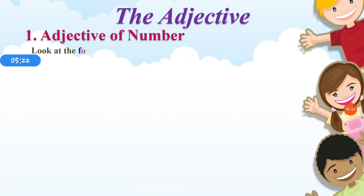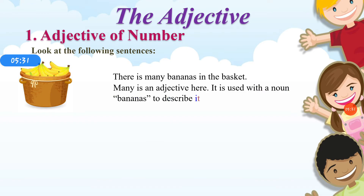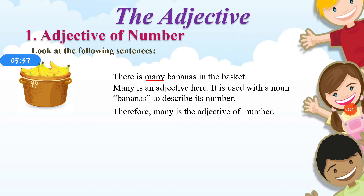Look at the following sentences. There are many bananas in the tree. 'Many' is the adjective here. It is used with the noun 'bananas' to describe its number. Therefore, 'many' is the adjective of number.